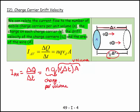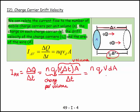This is the total charge inside the swept volume. Dividing by delta T gives the current. So the amount of charge per unit volume multiplied by the volume swept out in a certain time, divided by that time, gives the current. Simplifying, we get I = NQv_d A.